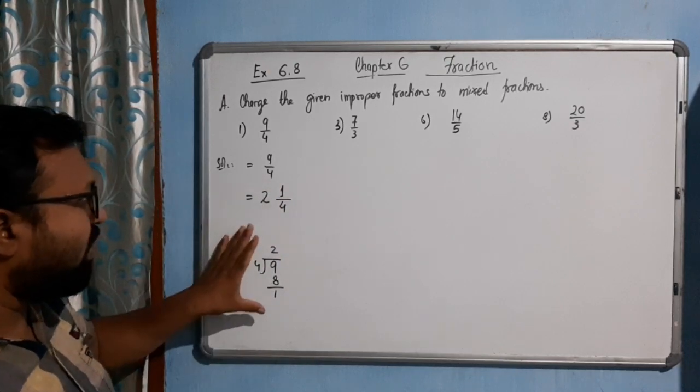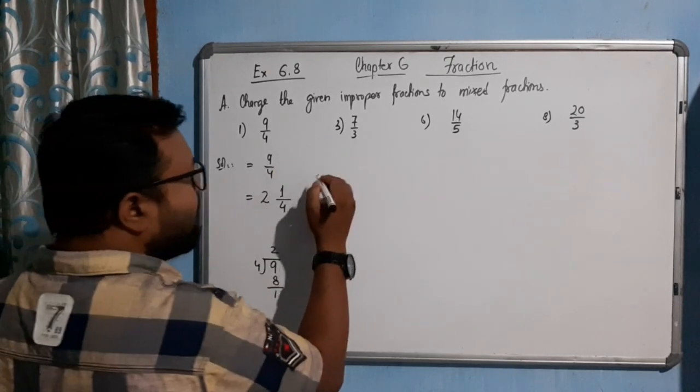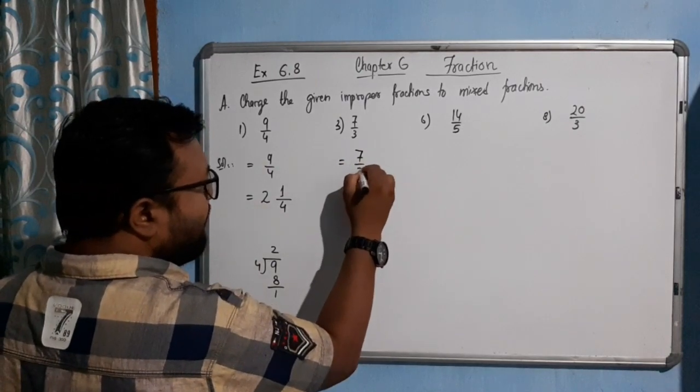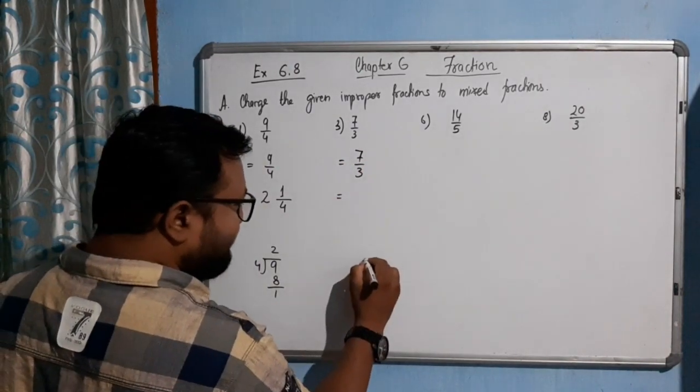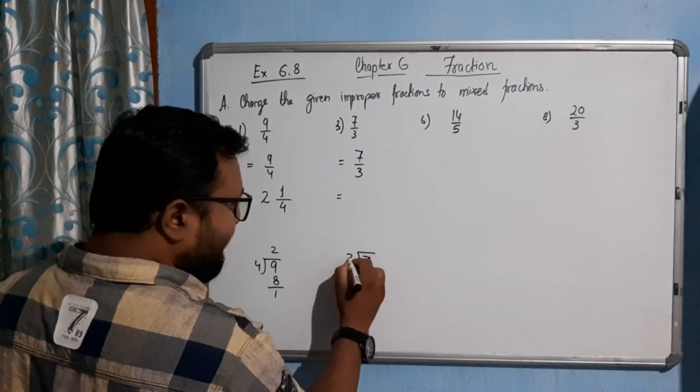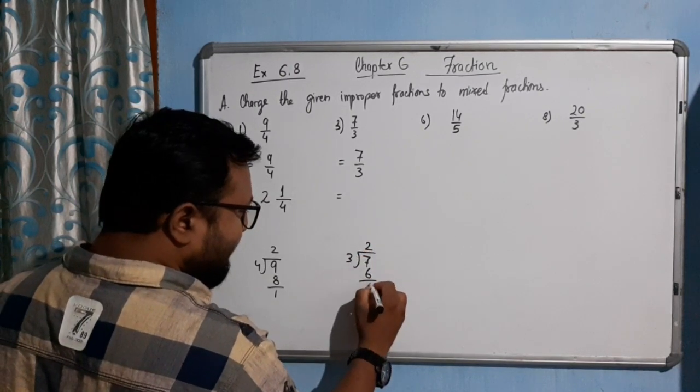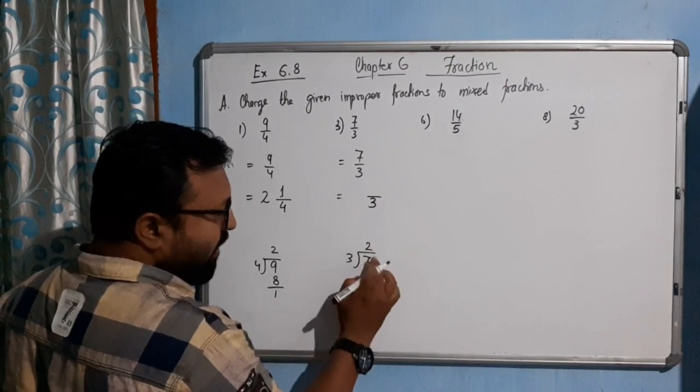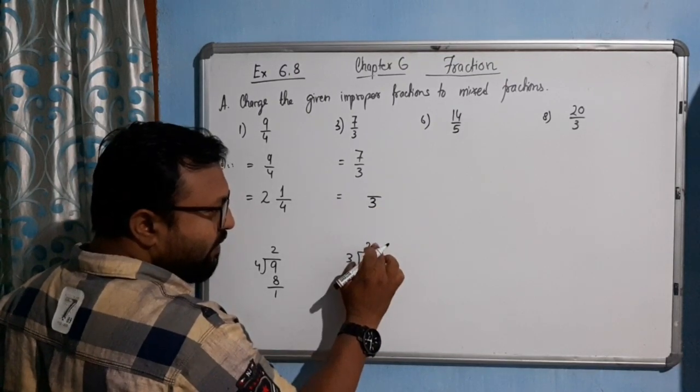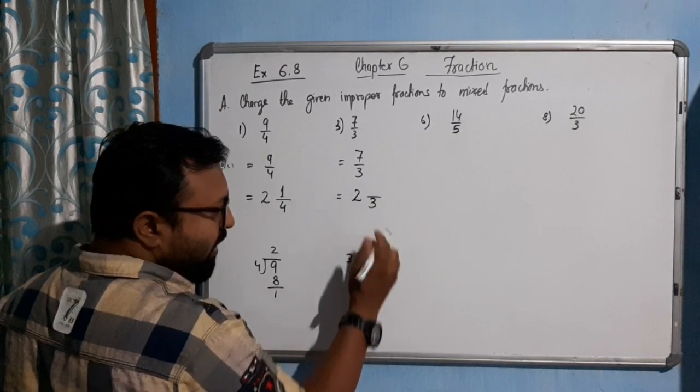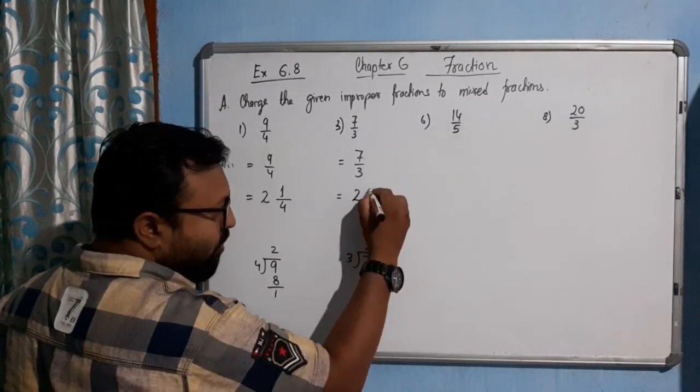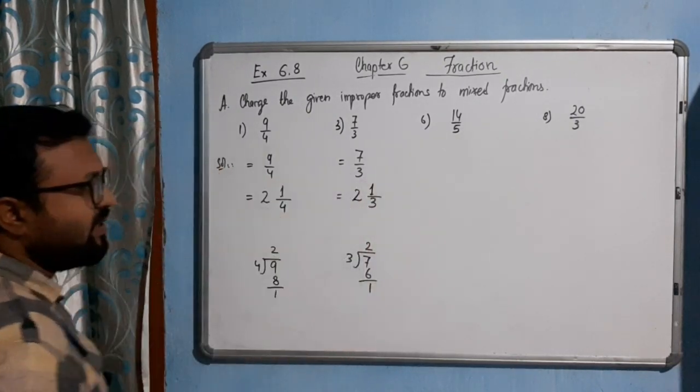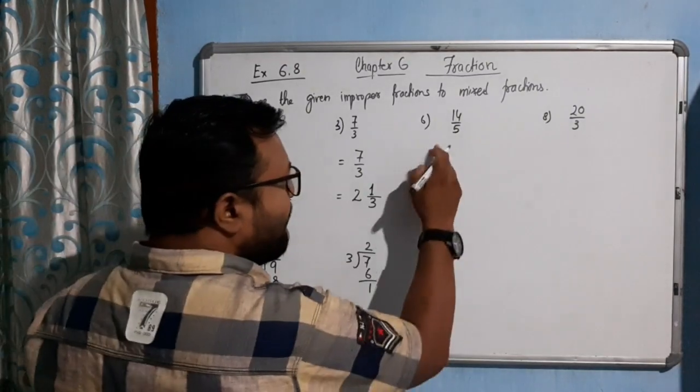Now come to this part. For this one, equal to 7 by 3. How will we write it? 7 divided by 3: 3 times 2 is 6, carry 1 here. Again, 3 is the denominator, we will write the denominator. This quotient will become our whole number, so 2, and the remainder of 1 will become our numerator. So 2 1/3.